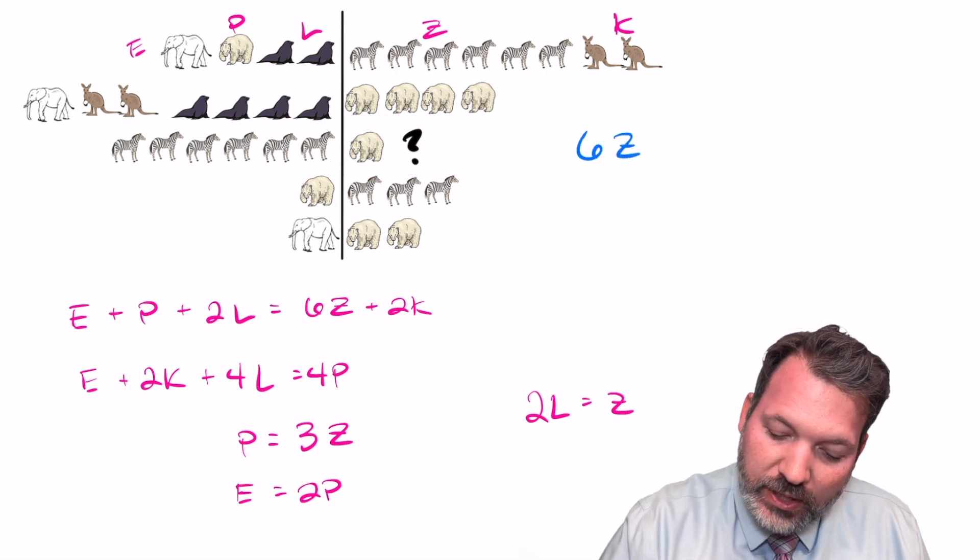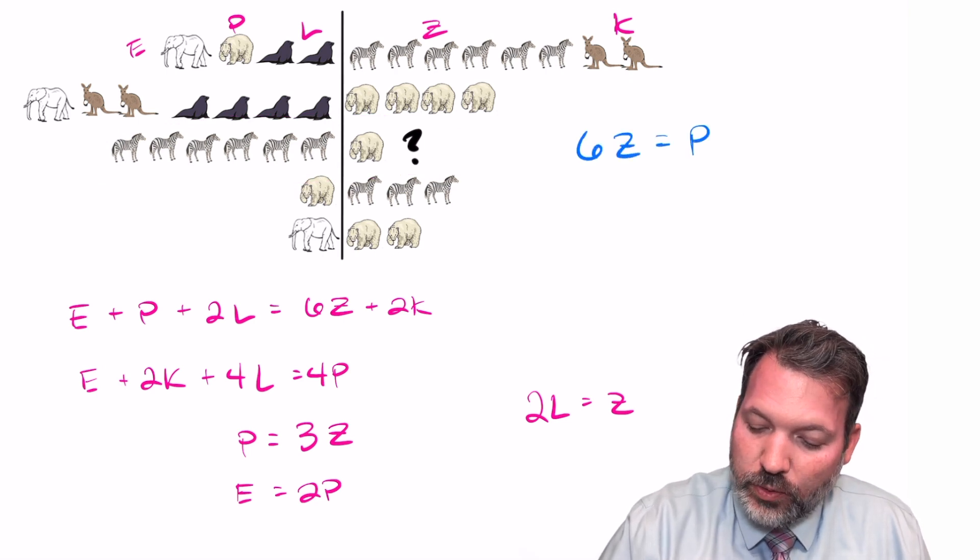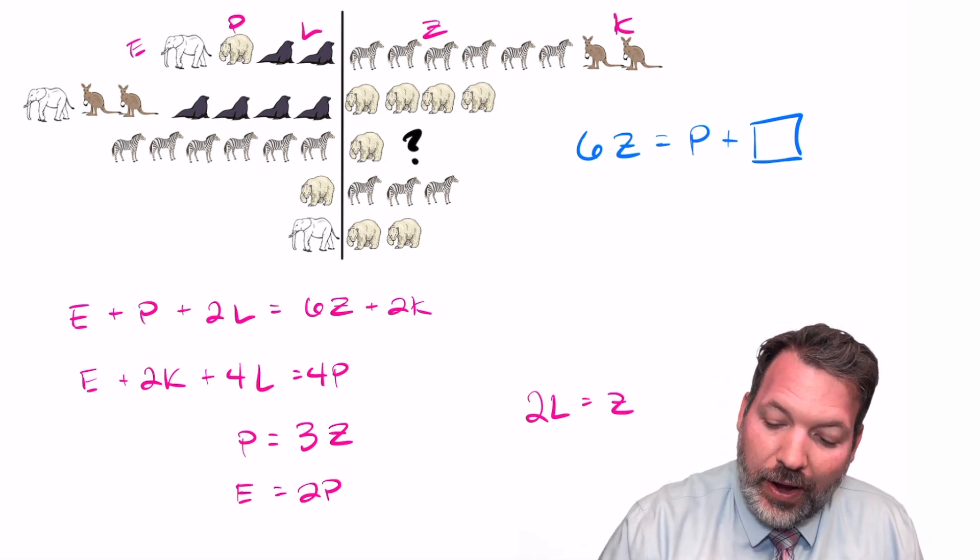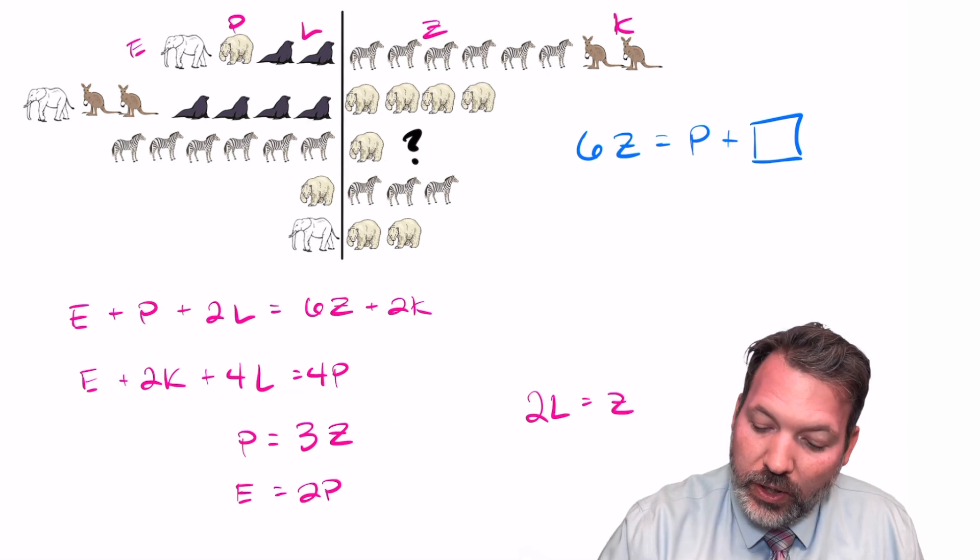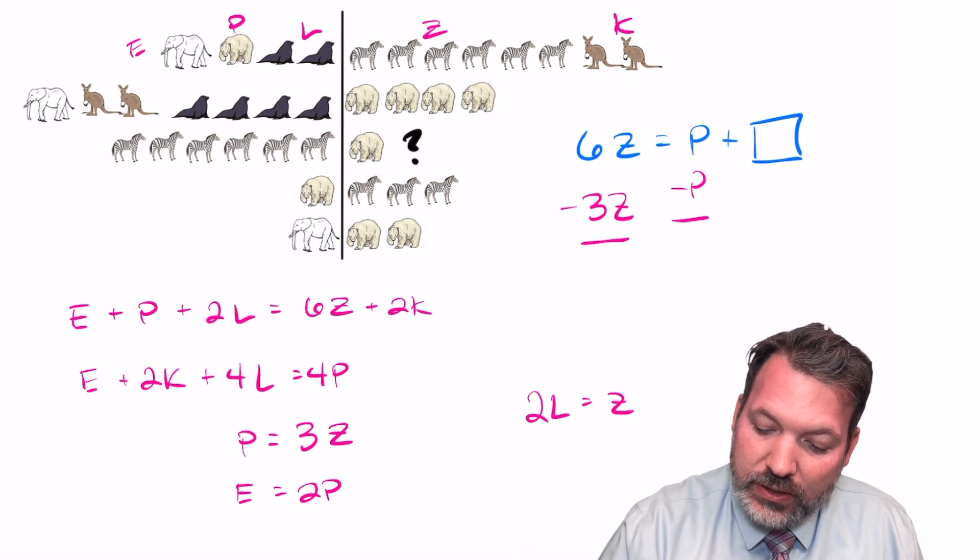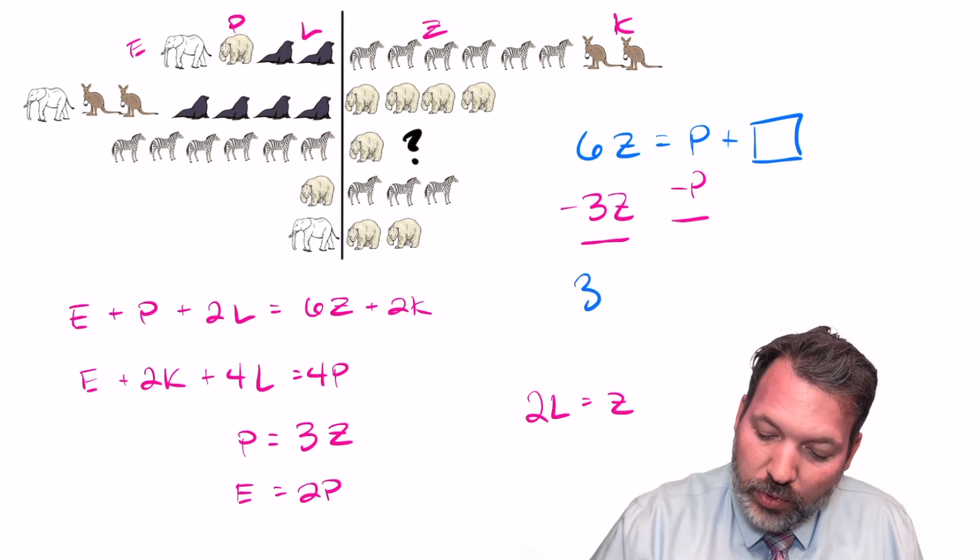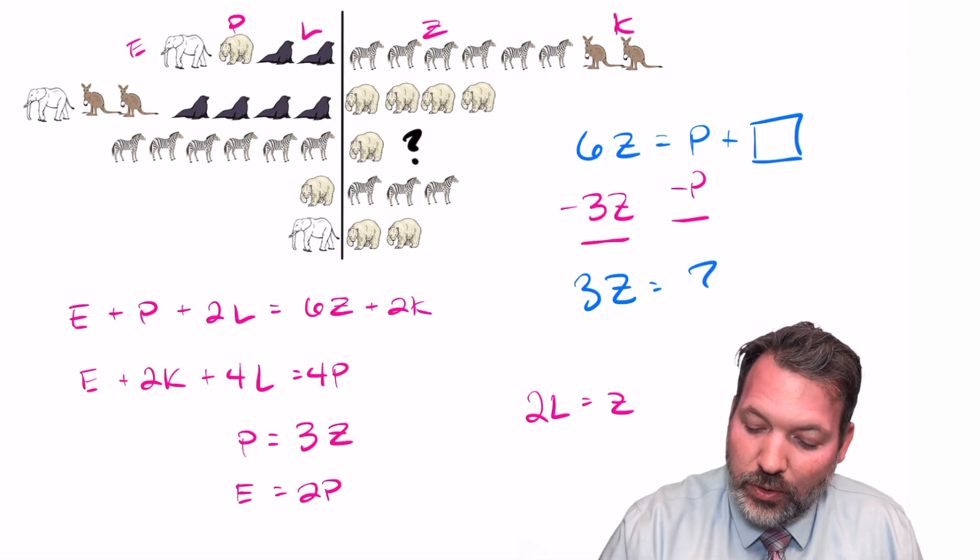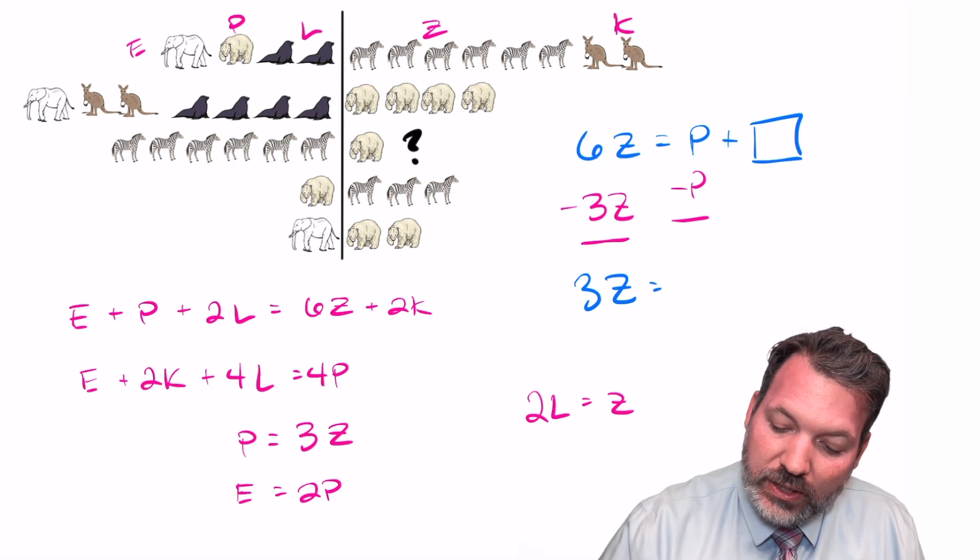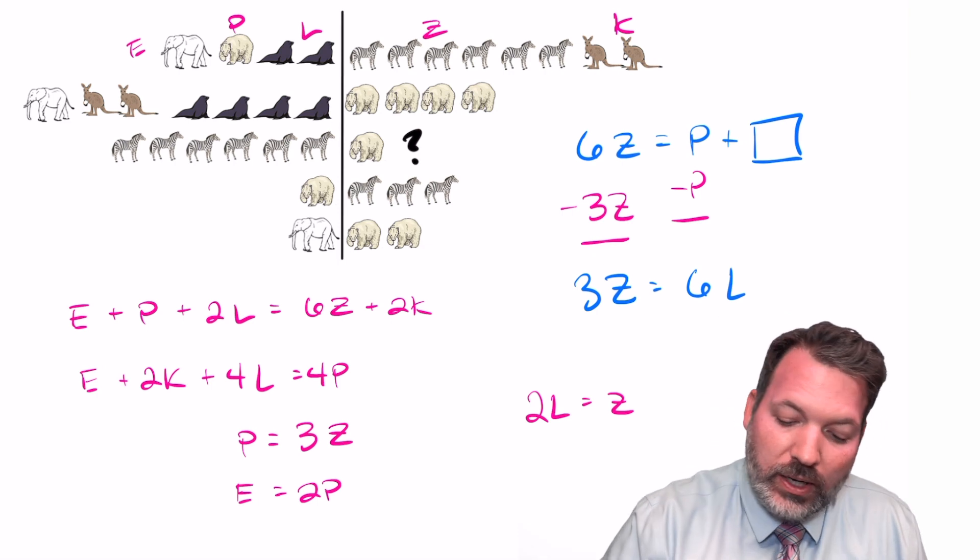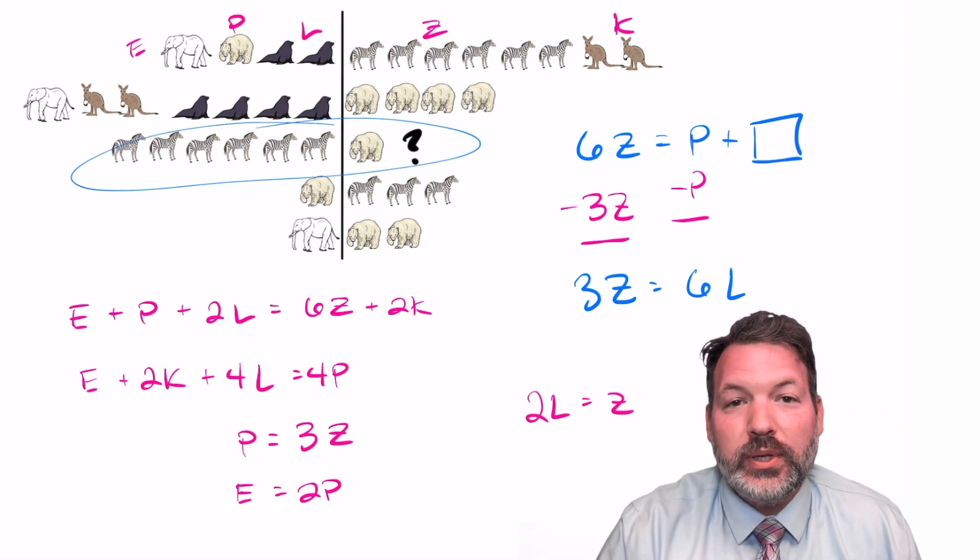In terms of an equation, we're essentially saying six Z equals P plus what if we're trying to create an actual equation. And using our subtraction property of equality one more time, we can subtract P on this right side of the equation, subtract three Z on this left side of the equation. And essentially we're saying three Z is equal to how many L? Being that we know two L correspond to every Z, we can say that three Z is equal to six L. And there we have it again. We need six seals to complete that third deck.